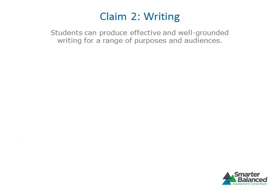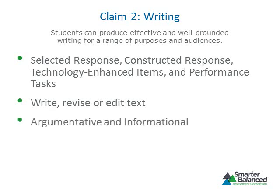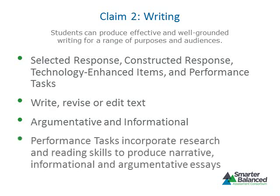Claim 2 focuses on writing and states that students can produce effective and well-grounded writing for a range of purposes and audiences. Evidence for Claim 2 will be provided by selected response, constructed response, technology-enhanced items, and performance tasks that focus on writing, revising, and/or editing brief texts and full compositions, sometimes referred to as full writes. Writing items and tasks will ask students to produce argumentative and informational essays. For high school students, performance tasks will require students to apply reading and research skills to write full narratives, informational or explanatory essays, and argumentative essays.